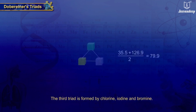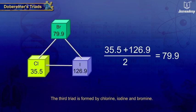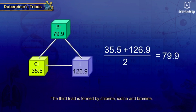The third triad is formed by Chlorine, Iodine, and Bromine.